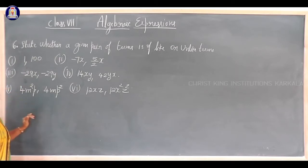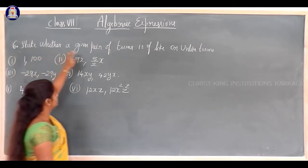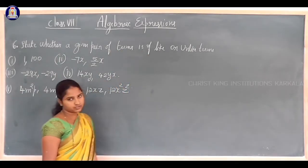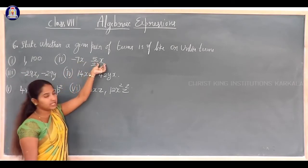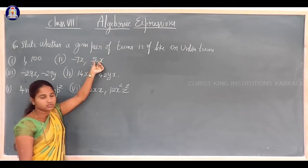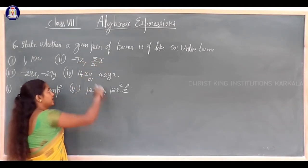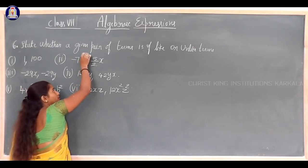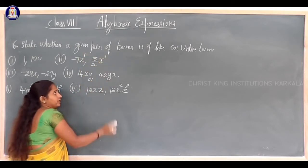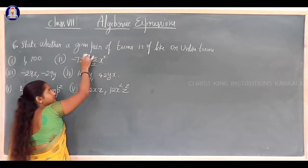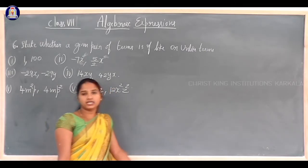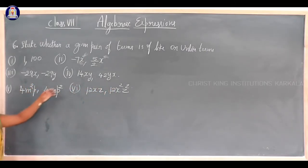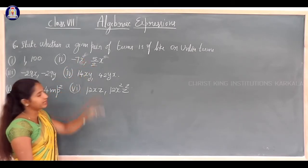The next question asks you to identify like terms and unlike terms — state whether a given pair of terms is like or unlike. Like terms means the algebraic expressions have the same variable and the same exponent. For example, x and x: same variable x, both with exponent 1 — same variable with same exponent, so that is a like term.